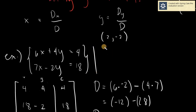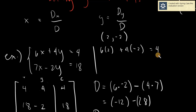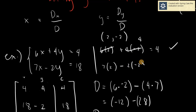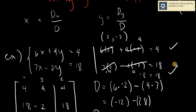Let's try it on our given system. We have 6 times 2 plus 4 times negative 2 equals 4. Evaluating this gives 4, which is correct. And next, 7 times 2 minus negative 2 equals 18. That's 14 plus 4, so 18 equals 18. Correct. Therefore, our determinant works — our solution is verified.